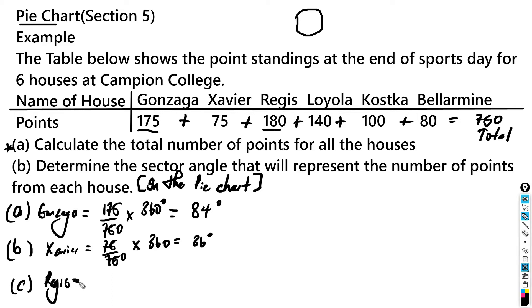Then for D, which is Loyola, it's 140 over 750 multiplied by 360, which should be equal to 67.2 degrees.